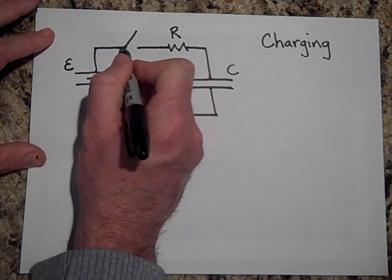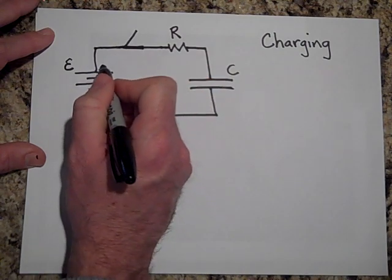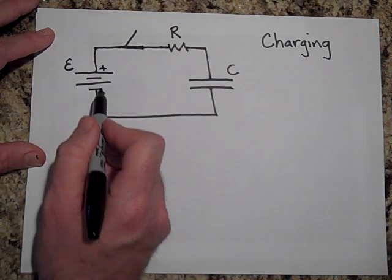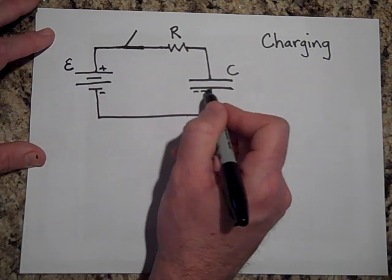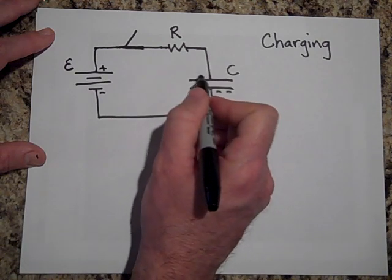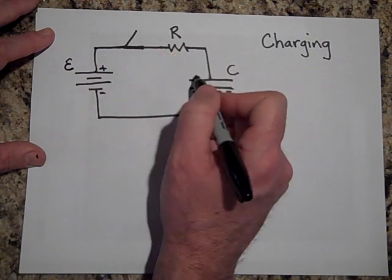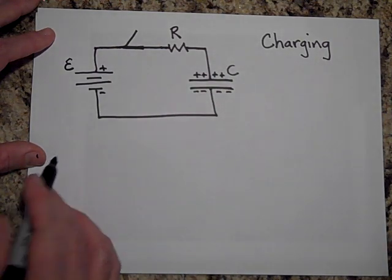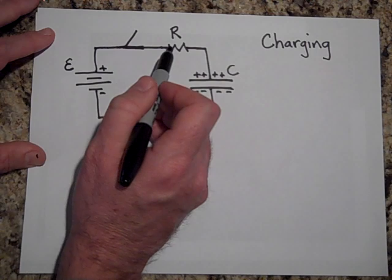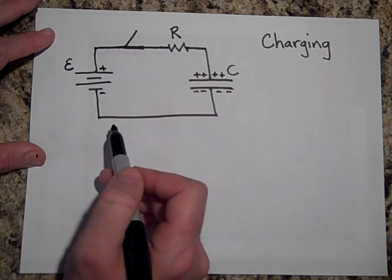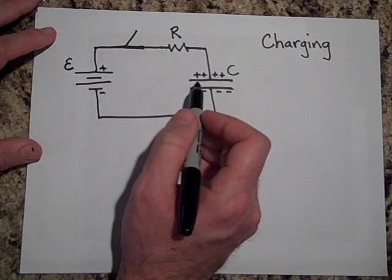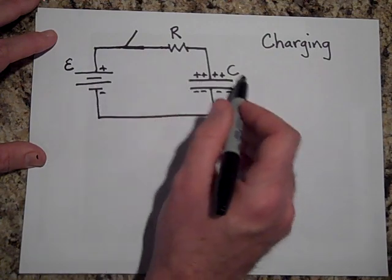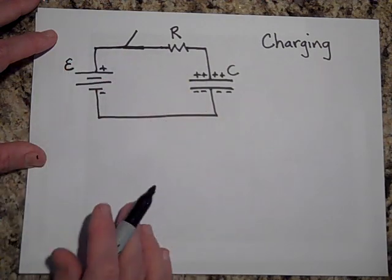The moment I close this switch, electrons are going to gather on this plate, which will push electrons away from the other plate and make it positive. Again, the bigger the R is, the slower it's going to happen. And the bigger the C is, the longer it's going to take to charge.